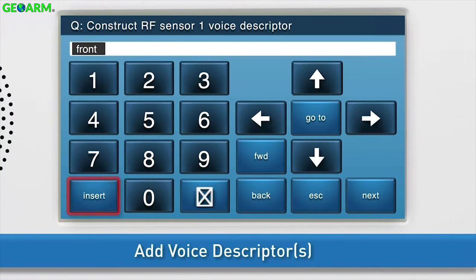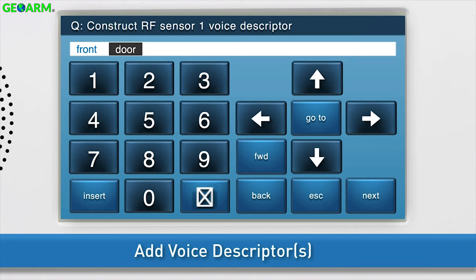To add another word, press Insert again and repeat the steps just discussed. You can add up to five words. Once the desired word or words displays in the answer box, press the down arrow to go to the next sub-question.